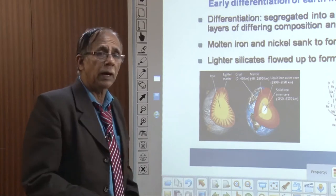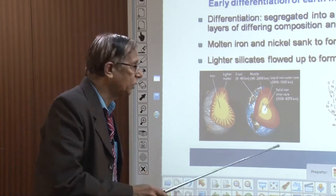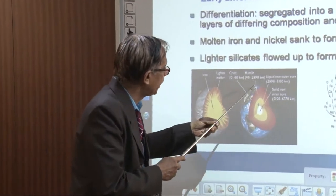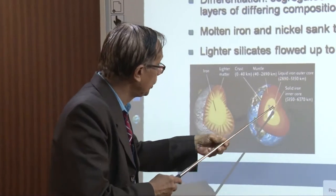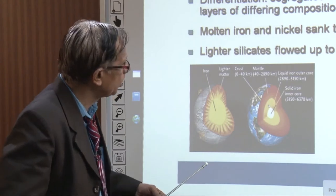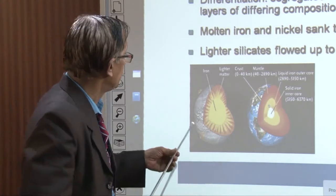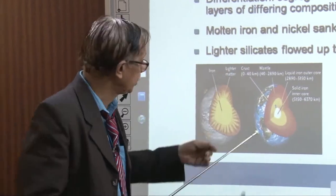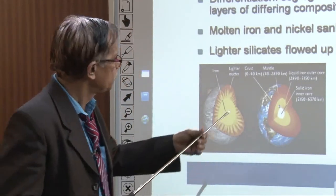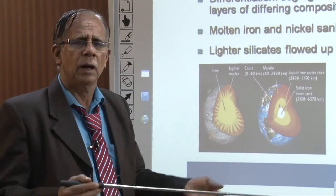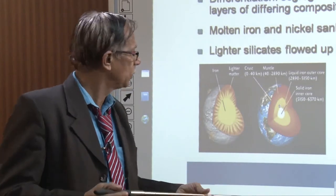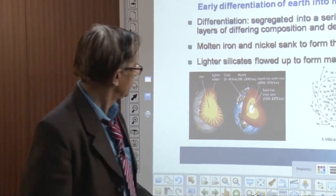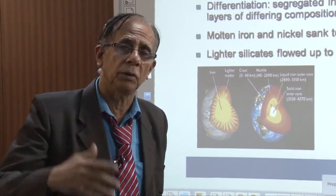Before going further, let me introduce key terms: crust — the outermost layer; mantle — a little inside; and core — deeper inside. The core is generally thought to be made up of iron and nickel. The mantle must be high density — around 7 to 8 — to give an average density of 5.5. The crust must be lighter materials like silicates, alumina, and silica.